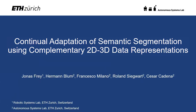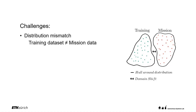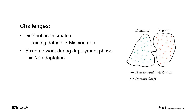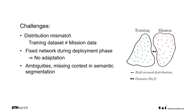We present our work on continual adaptation of semantic segmentation using complementary 2D to 3D data representations. Our work tackles the challenge of distribution mismatch between the available training dataset and data encountered by a robot during its mission. Today, most neural networks deployed on robotic systems are trained once and kept fixed during deployment. This prohibits adaptation of the robot to its operating environment. We tackle this problem for semantic segmentation where the data distribution depends on the robot's environment.